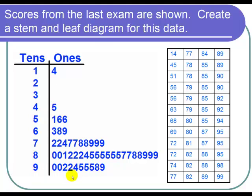So there's my stem and leaf diagram. Notice a few things. One is that there's a very clear outlier right here at the number 14. It's far away from all the rest of the data.